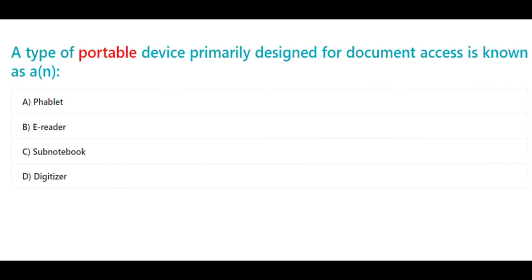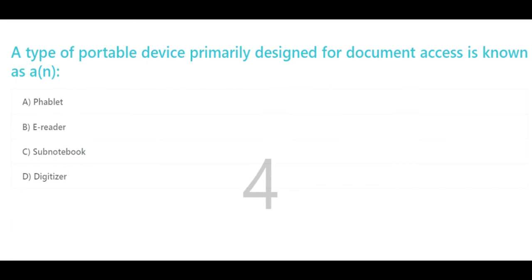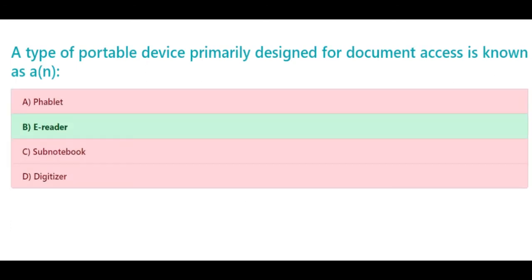A type of portable device primarily designed for document access is known as: A. Fibolt, B. E-reader, C. Subnotebook, D. Digitizer. The correct answer is B. E-reader.